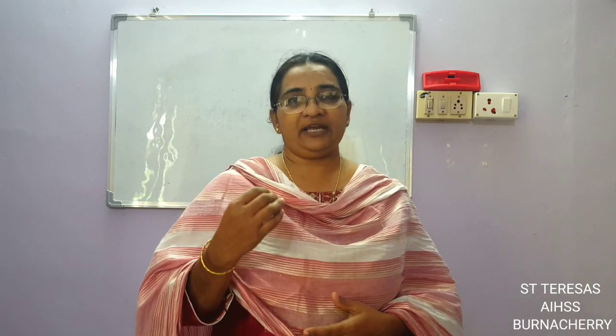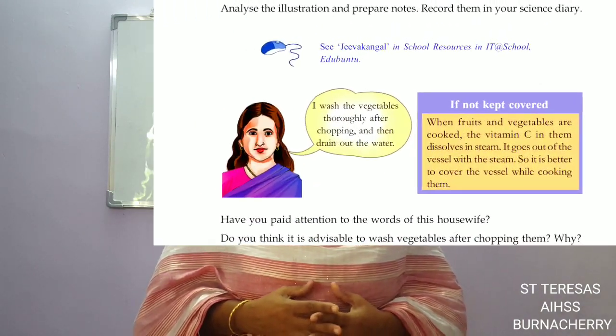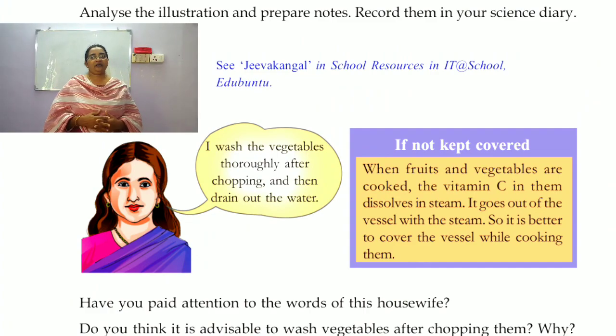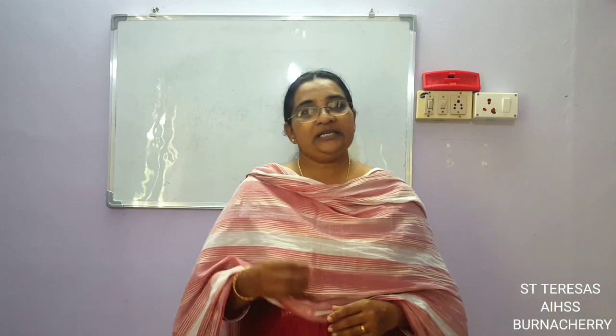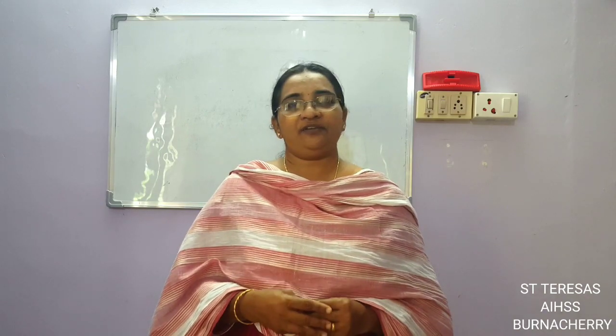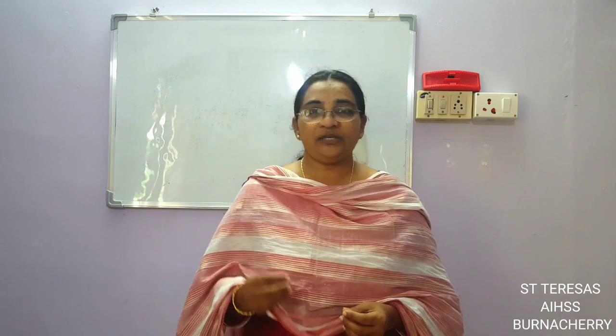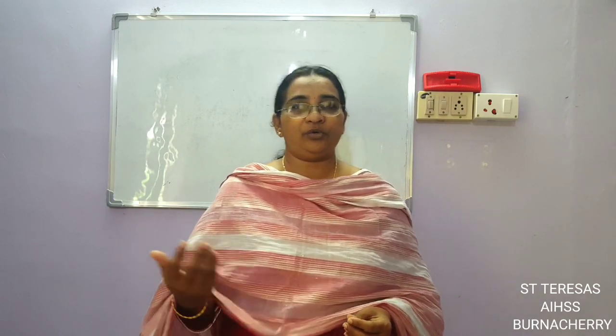So on that same page, there is an illustration of a lady saying she cleans the vegetables, cuts the vegetables, and washes them before she cooks. Is it good to do that? We all know it is not good. Before cutting the vegetables, we have to wash them. And when we boil vegetables, we have to boil them with the lid closed. Because vitamin C dissolves in water, and when steam comes out, the vitamin C dissolves along with the steam and goes out into the air. So we must close the lid when cooking so that vitamin C is not lost.